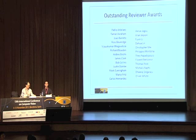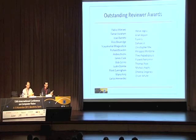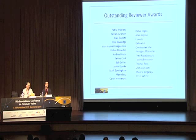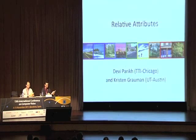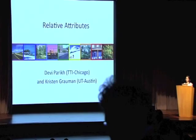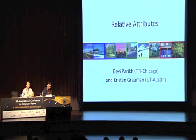The first paper is our Mark Price winning paper. The title is Relative Attributes. It's authored by Devi Parikh at the TTI Chicago and Kristin Grauman at UT Austin. Devi will present the paper.